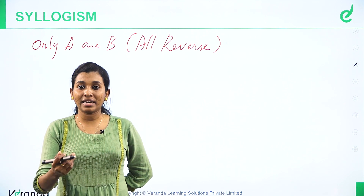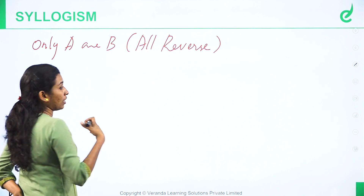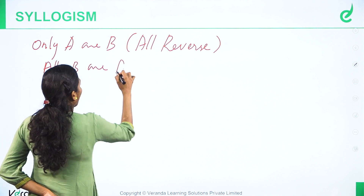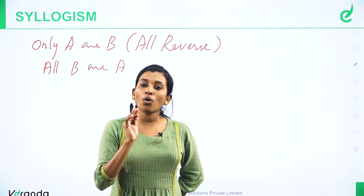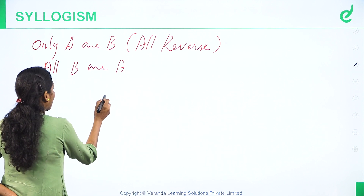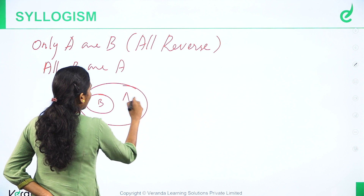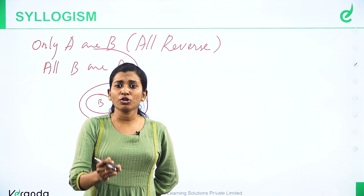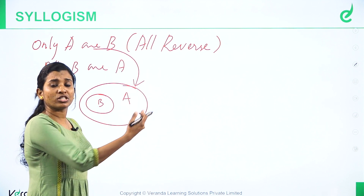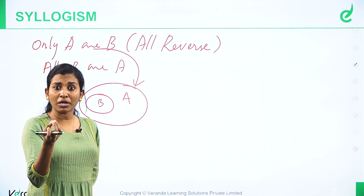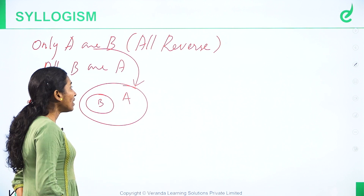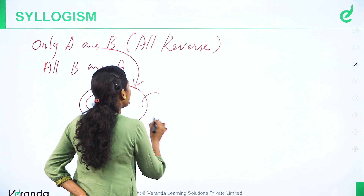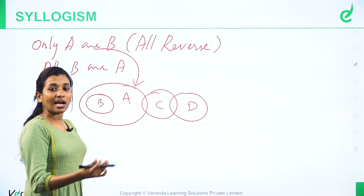Now, regarding how to approach statements — if you have a question with items A, B, C, D, all these items together are part of the approach. If you have a C or a D, all these items are relevant.